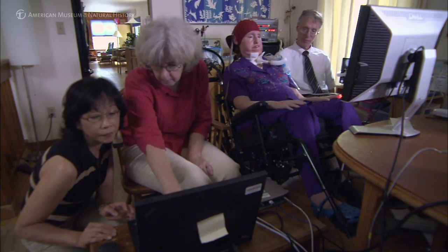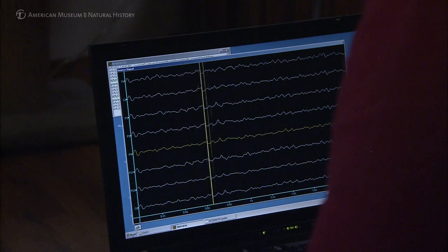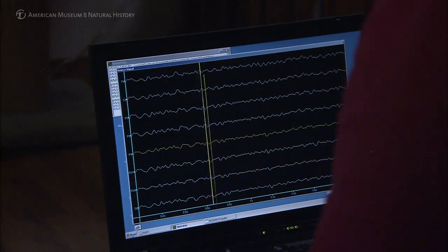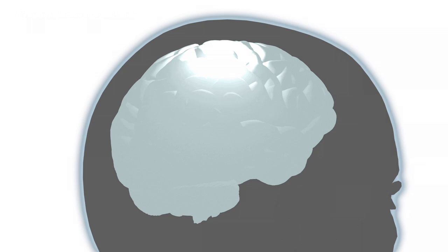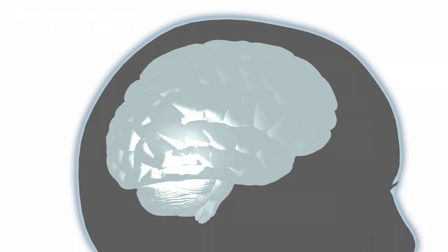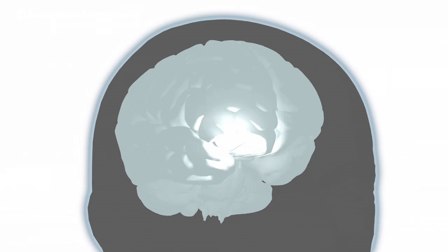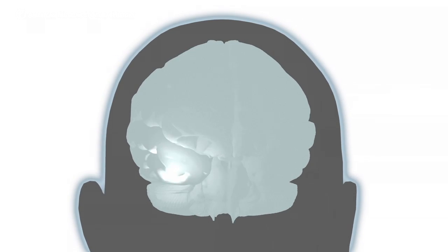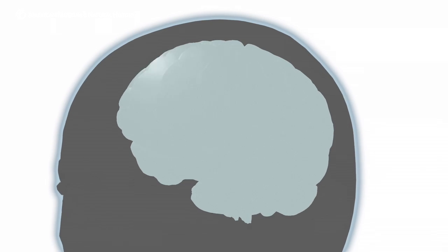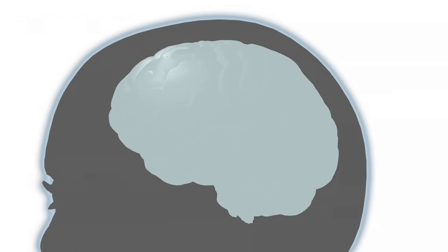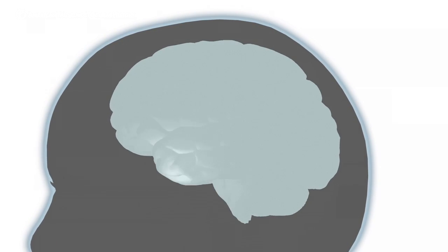The alternative we're trying to develop for people like that is to use brain waves — the actual electrical signals produced by the brain in the course of its normal activity — as a communication tool. When nerve cells are active and the connections between them are active, when they're talking to each other, they produce electrical fields detectable right next to the neurons and also from the scalp. These are called EEG signals.